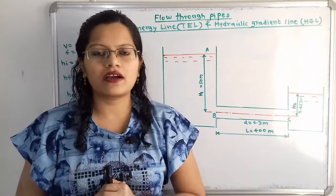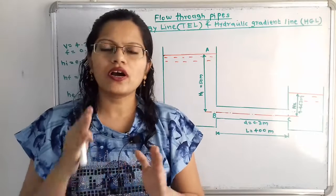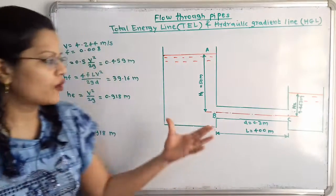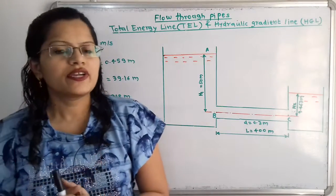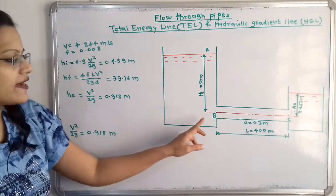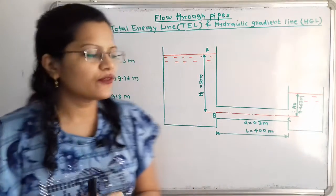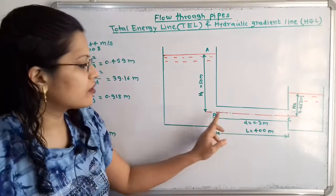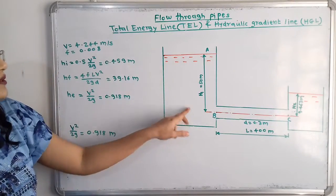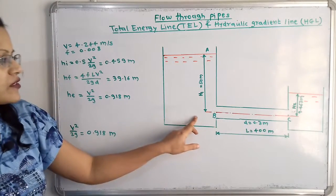Hello friends, this is Priyanka. Today we are going to study how to draw the hydraulic gradient line as well as the total energy line for a given arrangement. Here is a pipe attached to a tank at its entrance as well as at the exit. The length and diameter of this pipe are given, and the distance of the water surface level from the center of the pipe is also given.